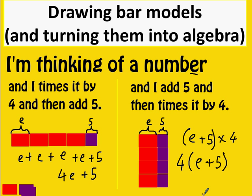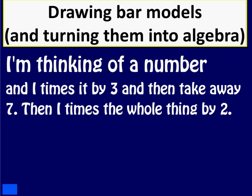Between a number and a variable, or between a number and a pair of brackets, if you don't write any symbol in between, everybody understands that you mean multiplication.